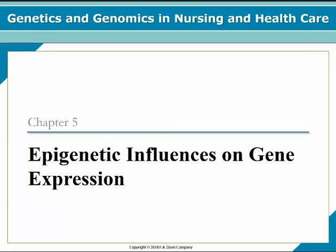The learning outcomes for this chapter include: to describe how the epigenome is related to the genome, explain how epigenetic changes affect gene expression, provide three clinical examples demonstrating the impact of epigenetics, explain the processes of methylation and histone modification, describe the role of microRNA, explain how epigenetics plays a role in cancer, describe the microbiome, and discuss the impact of specific environmental toxins on gene expression.